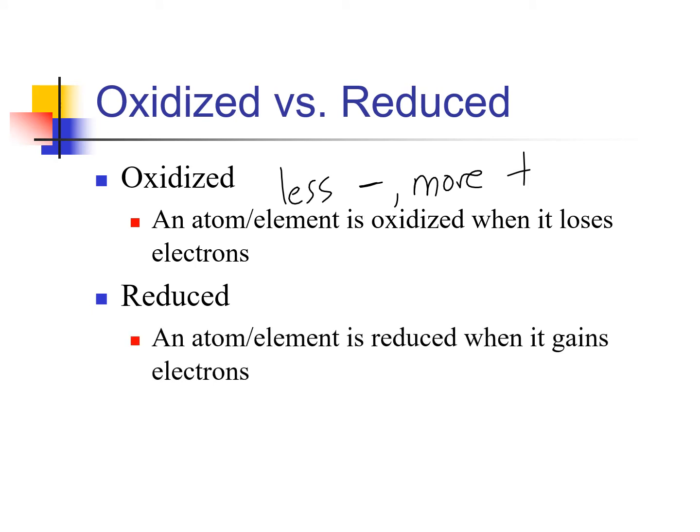To be reduced is the opposite — an atom or element is reduced when it gains electrons, becoming less positive or more negative. The first simple truth for this chapter: reduction is gain of electrons. I remember it because it's backwards — we think of reduction as losing, but no, reduction is the gaining of electrons. Something is reduced if it gains electrons. It's all about electrons.